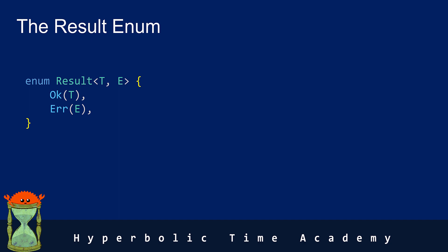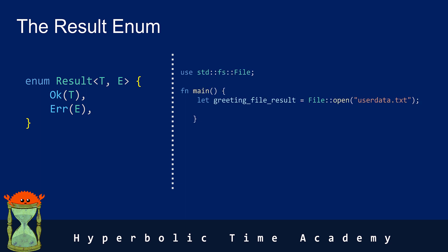Let's say we're building an app that reads user data from a file. We can't guarantee the file will always exist in the file system, right? That's where the result enum comes in handy. Here we're looking at a simple Rust program that attempts to open a data file. First, we're importing the file struct from the standard file system module, which essentially provides file system functionalities.